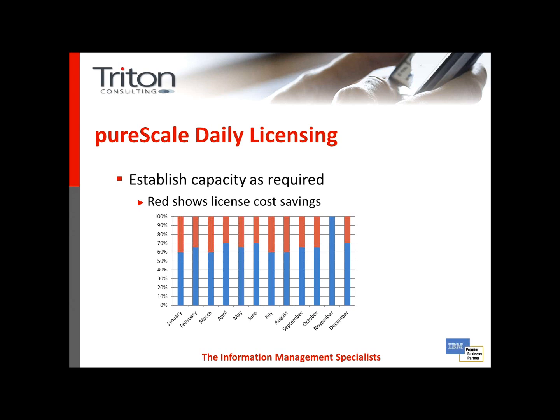In this foil, we're going to briefly touch on one of the value propositions for DB2 PureScale, which is the daily or dynamic licensing view for software costs. In the chart presented, in a traditional environment customers would look to provide capacity to deal with their biggest spikes in terms of workloads. That would mean spending on hardware and, more importantly, software licensing across the whole year at the 100% band — right at the top of the chart — to deal with, in this example, a November spike.